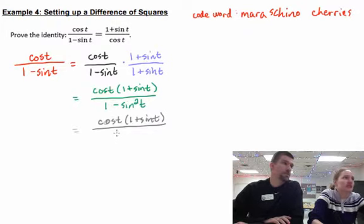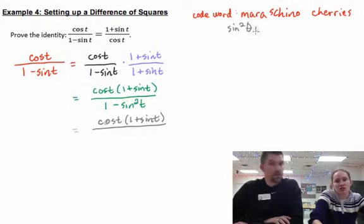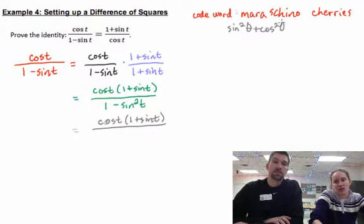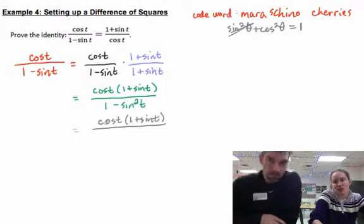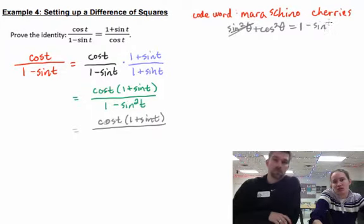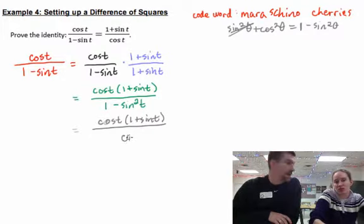If you look at your Pythagorean identities, if we mess with... sin²t + cos²t. Mess with that guy. We want to subtract sin²t over. So, 1 - sin²t equals cos²t. I like it already.